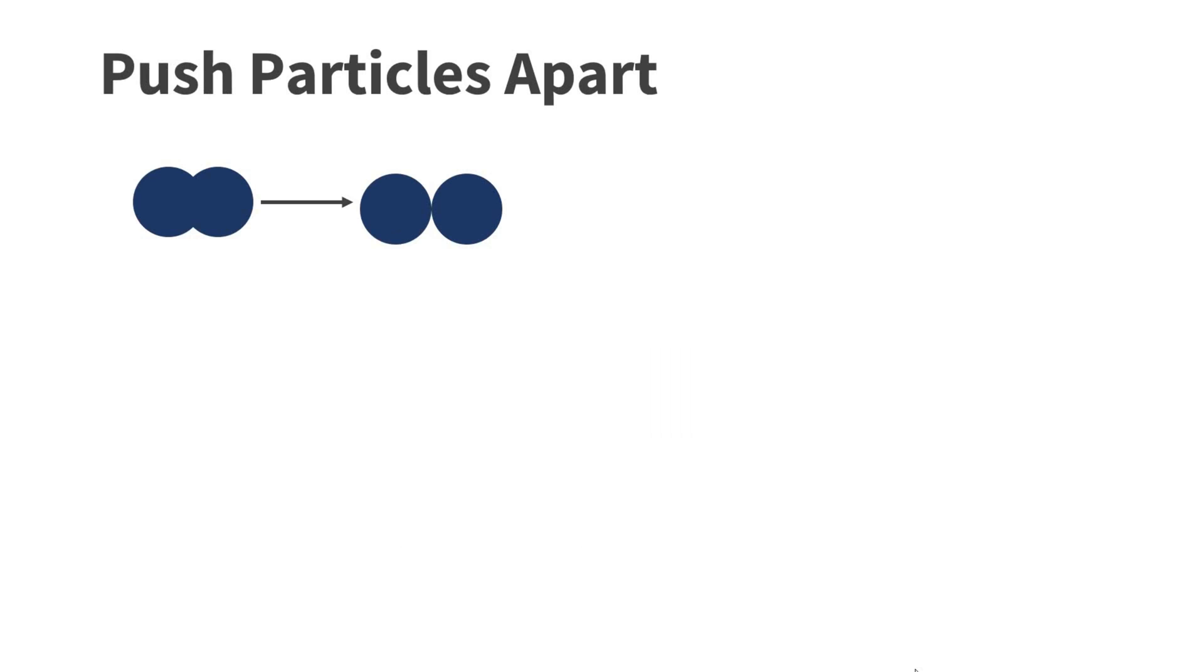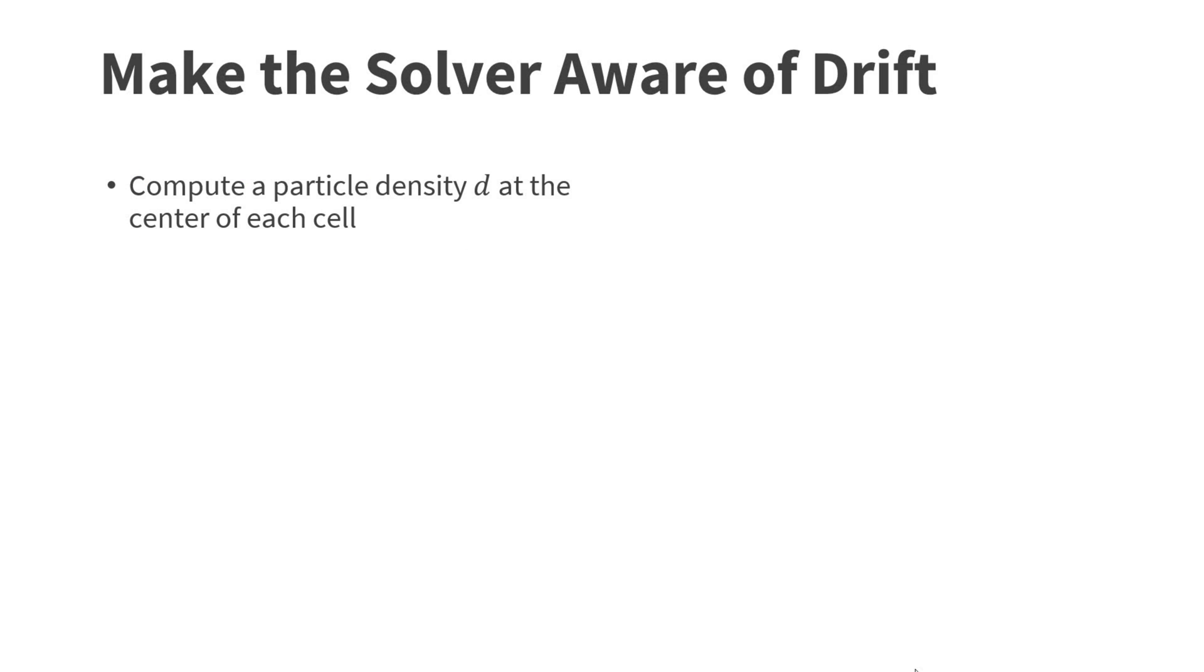Two fixes are necessary to fix this problem. First, we need to push the particles apart. We could simply check all pairs. Unfortunately, this would be very slow. I use a grid to speed up these checks. In tutorial 11, I explained in detail how this can be done. Alternatively, you can just check the code. Even after pushing the particles apart, the solver still doesn't notice if too many particles are located in one cell.